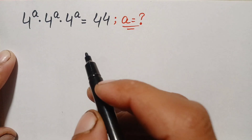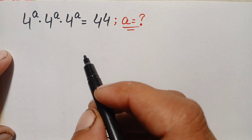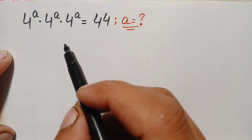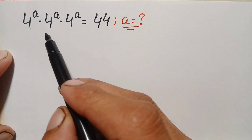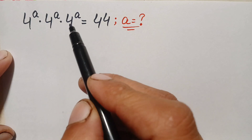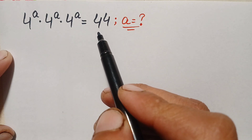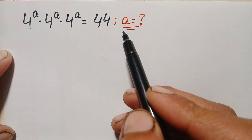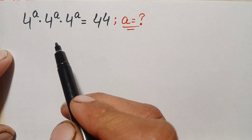Hello everyone, welcome to Math Explorer. In this video, I'm going to solve this interesting exponential math problem: 4 raised to power a, times 4 raised to power a, times 4 raised to power a, is equal to 44. We will find the value of a.